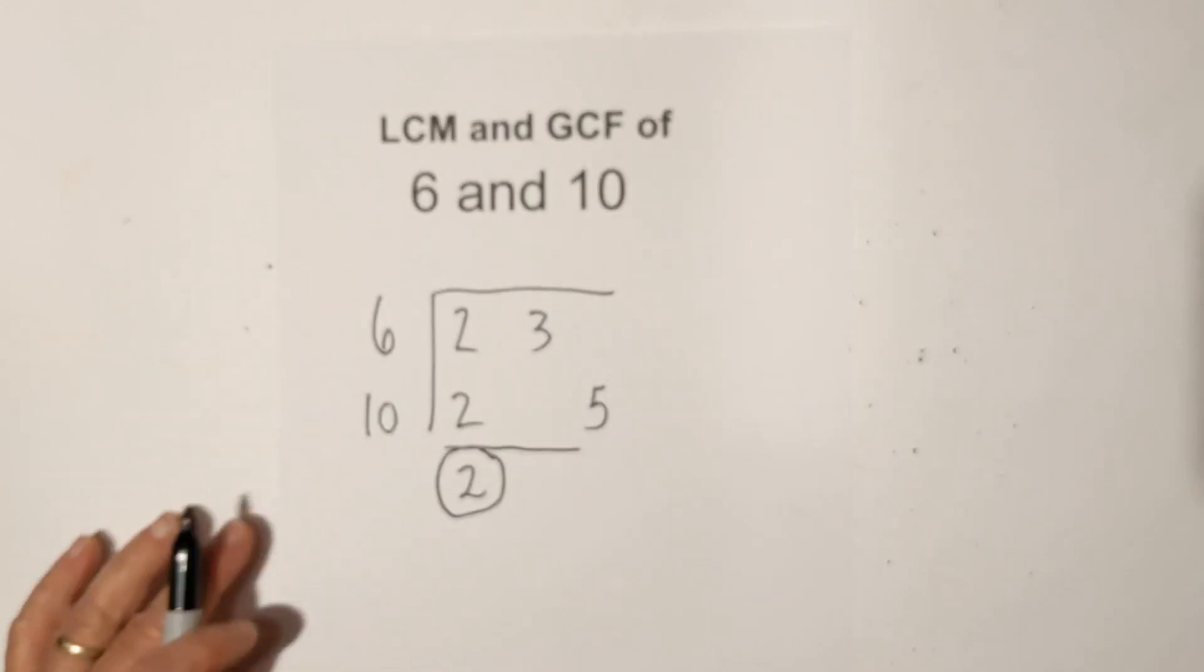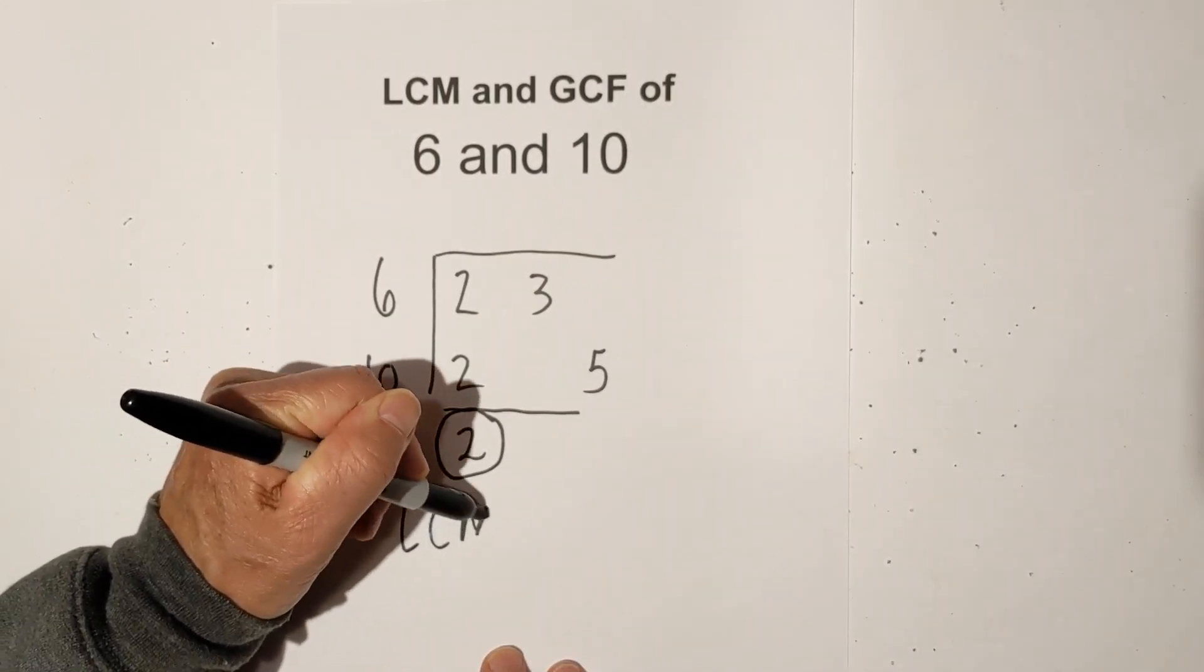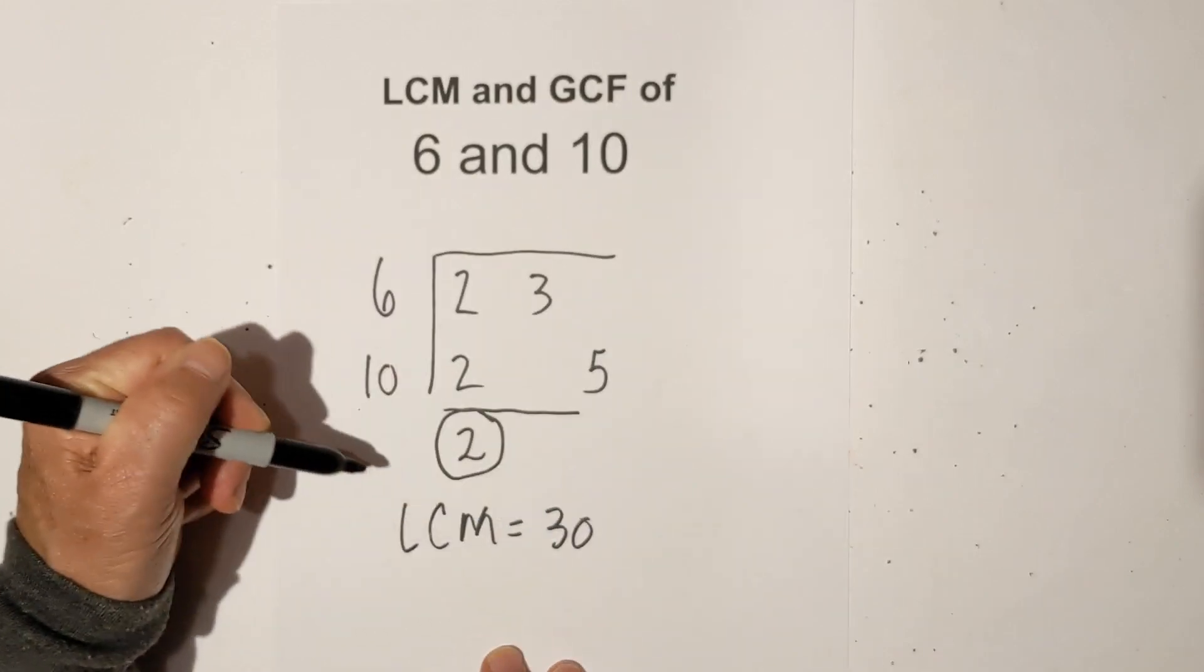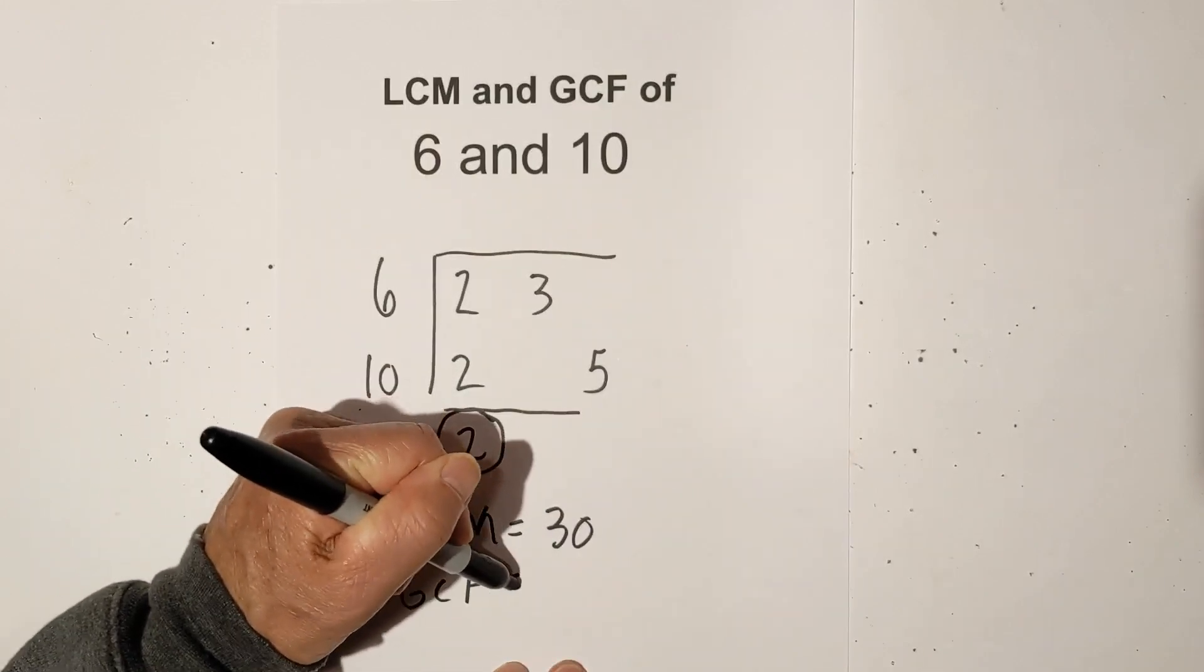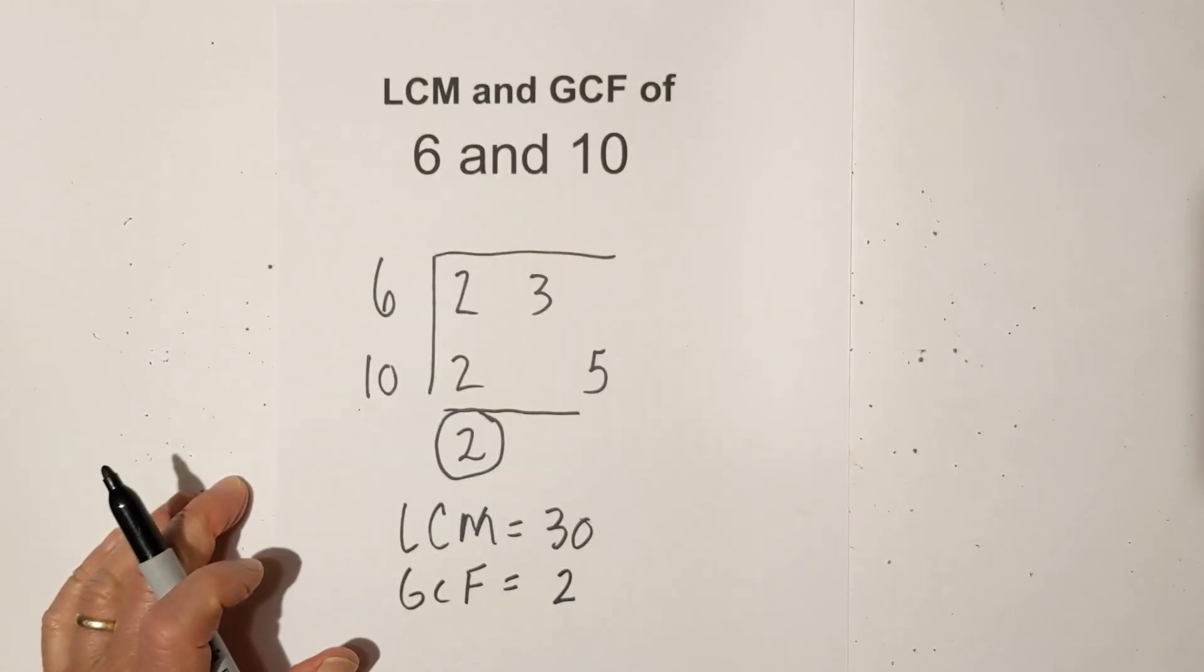So in summary the LCM equals 30 of 6 and 10 and the GCF equals 2. Thanks for watching and remember kindness multiplies kindness. Be kind to somebody today.